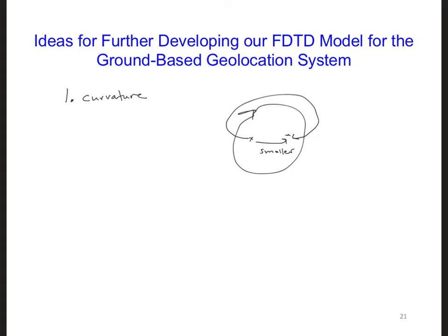Fortunately, to take into account the Earth's curvature, the update equations don't actually need to change in our model. The only thing that needs to change is the dimensions of each cell in each direction. So we'd have to use spherical coordinates to figure out the dimensions of each cell and how they get bigger as you go radially outward from the surface of the Earth.